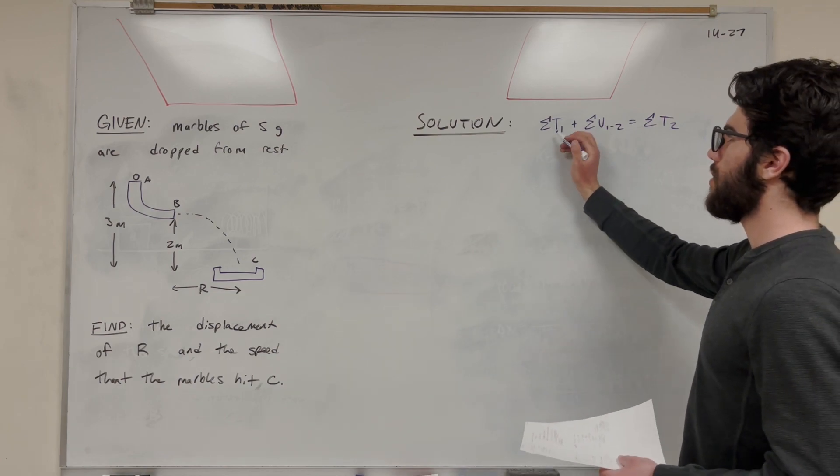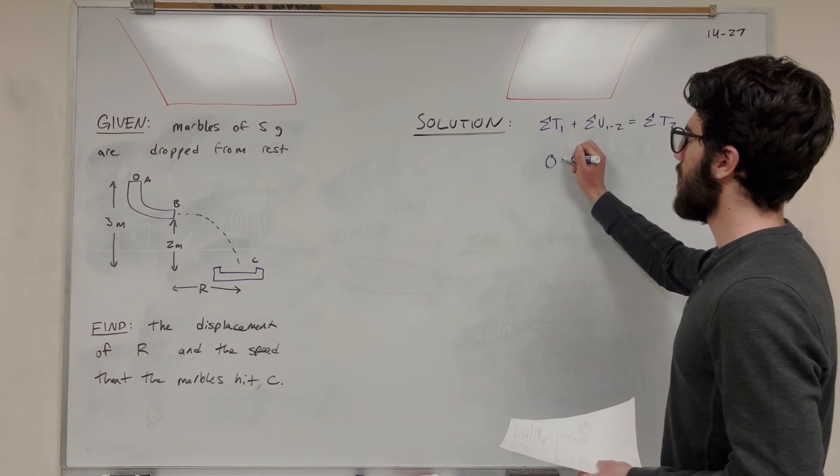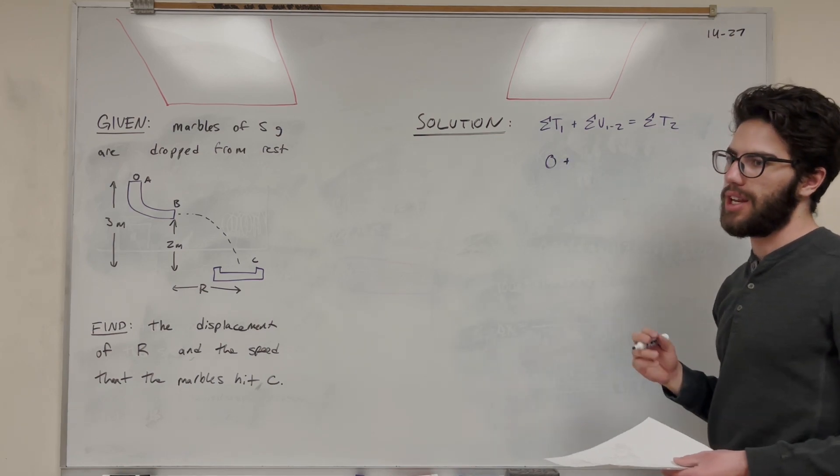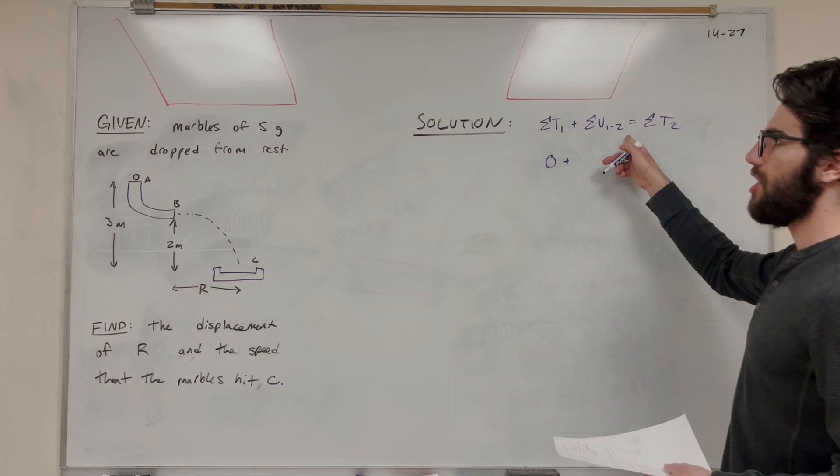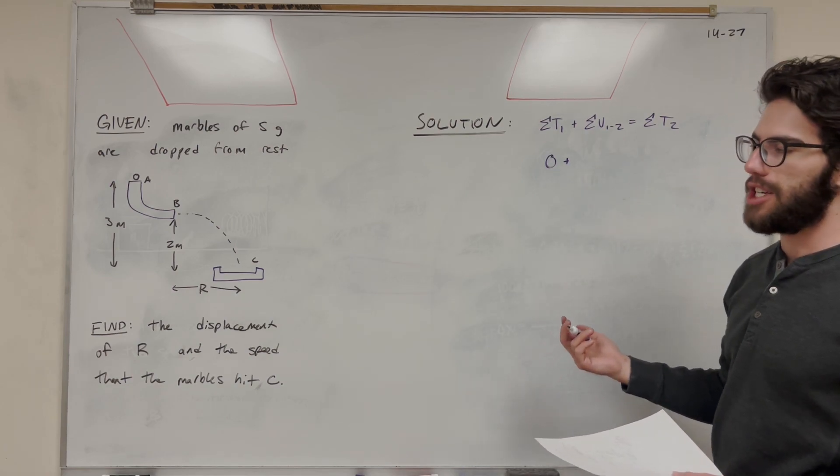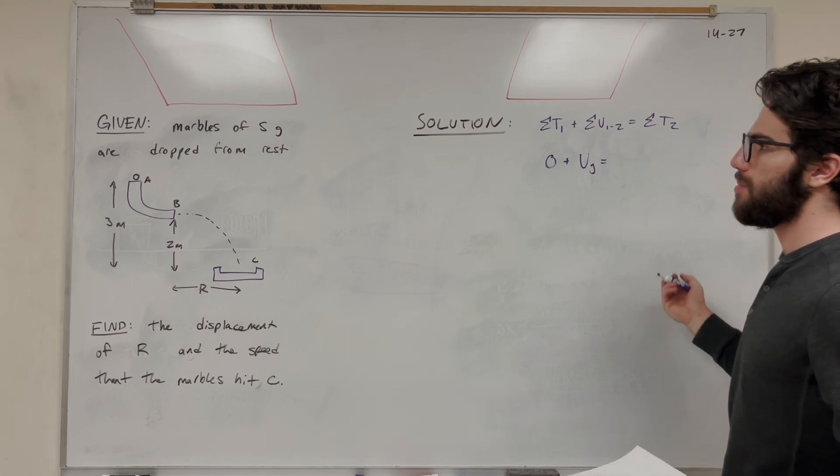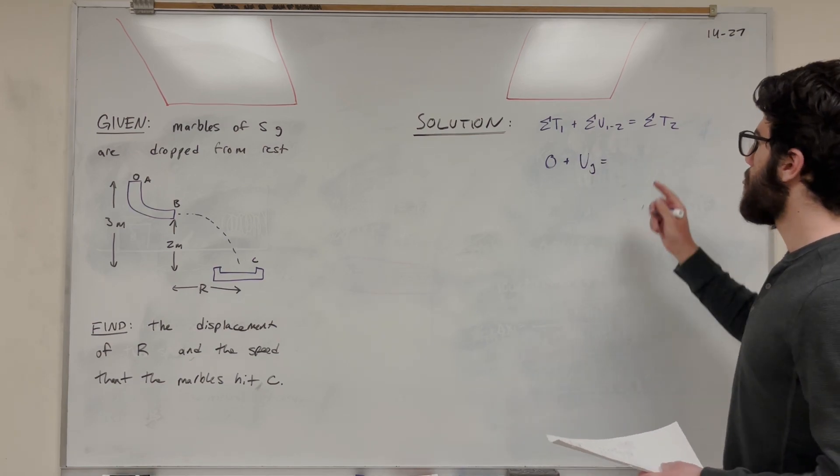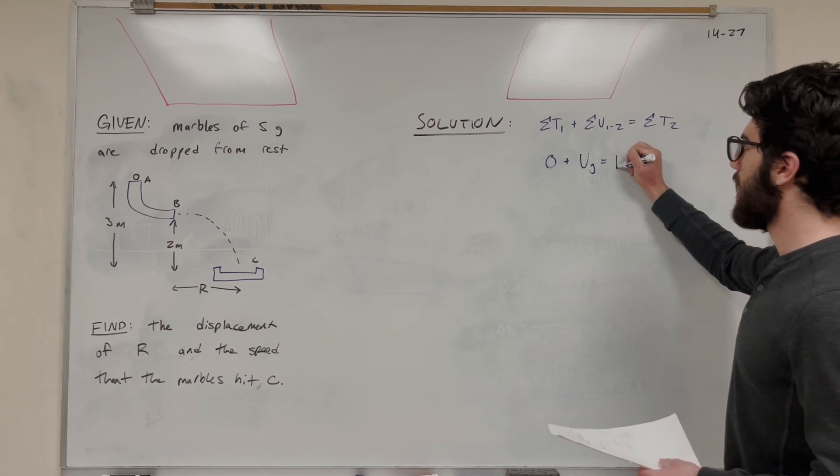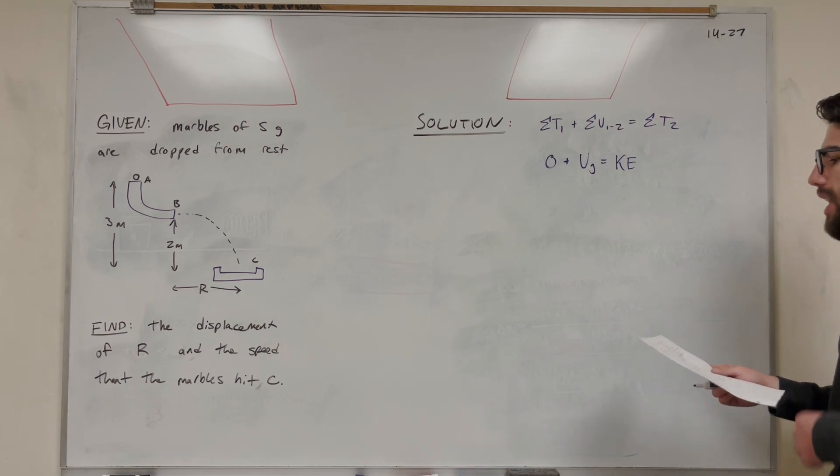We know that these start at rest, so initial energies - there's no kinetic energy at the beginning, so we can ignore that. The change in energy from A to B comes from the gravitational potential energy. It's going to pick up speed from falling a meter. The final energy is at the bottom - that's going to be kinetic energy. So now we have this equation: the gravitational potential energy is equal to the change in kinetic energy.